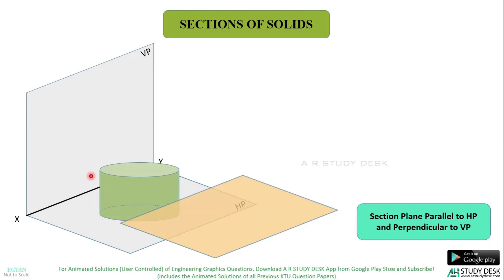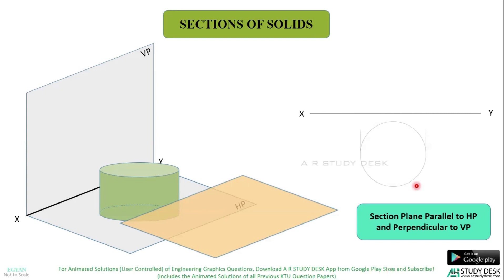Now you can see the remaining portion of the cylinder in which you will get a circular cross section at the top. Now we will see how to draw this on a sheet of paper. Draw the XY line. Draw the top view and front view of the complete cylinder using thin lines, because we will use thick lines only for the remaining portion of the cylinder.